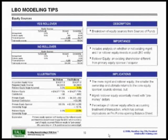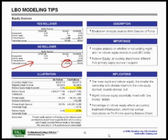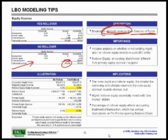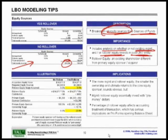Moving on to the next slide, let's talk about equity sources. First, let's look at the no rollover scenario — very straightforward. We needed to come up with $4.26 billion to fund our LBO from equity sources. This equity sources breakdown shows where you're going to obtain your equity from. Importantly, this should include an analysis of whether the existing management team and/or rollover equity invests in the post-LBO entity — typically yes for management, because you want to continue incentivizing them.